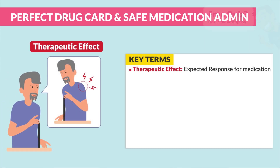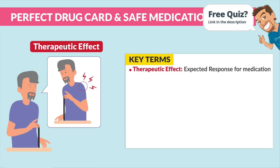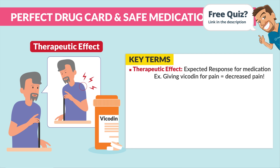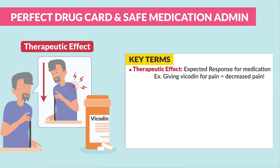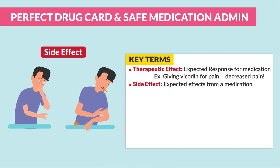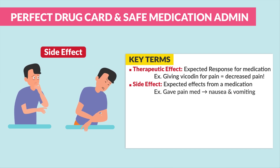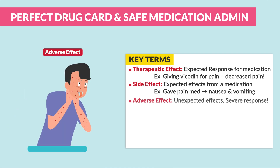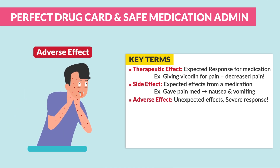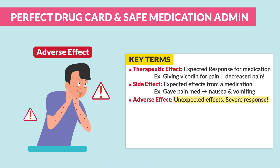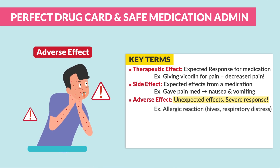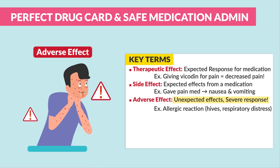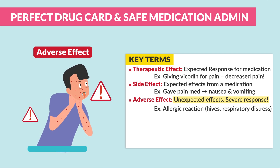Now for the key terms. Therapeutic effect is the expected response of the medication — for example, giving Vicodin for pain, we expect decreased pain. A side effect is the expected effects from a medication — for example, a pain med can cause nausea and vomiting. This is very different than adverse effects. Please be sure to write this down: adverse effects are unexpected and severe responses — not a side effect. For example, an allergic reaction, which can manifest as hives or even respiratory distress.